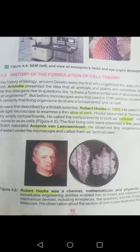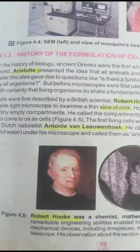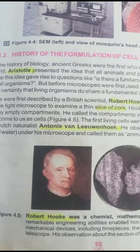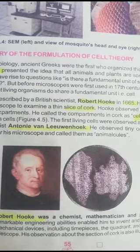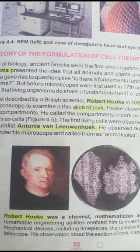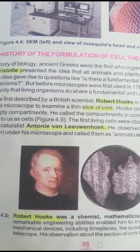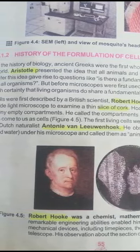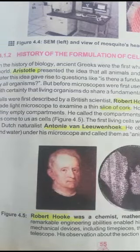First of all, the first scientist is Aristotle. Aristotle was a Greek scientist and he gave the idea that all animals and plants have something in common — that they are made up of some fundamental unit. That fundamental unit is the cell, as we now know.